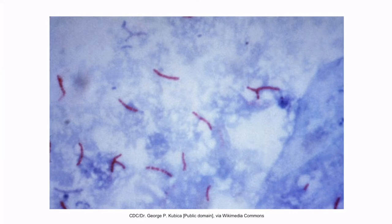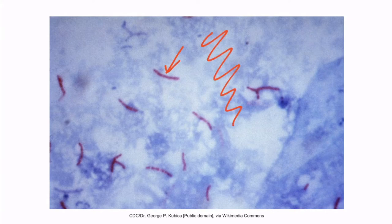This is an acid-fast stain of mycobacterium tuberculosis, not nocardia. However, nocardia would stain similarly, and this is a great image to see what the stain looks like generally. Notice that the organism appears bright red after staining and there is a blue background. In the acid-fast stain, a sample of the organism is stained red with carbofusion; alcohol is added followed by a methylene blue counter stain. The high mycolic acid concentration in the cell wall of acid-fast organisms retains the red staining of carbofusion, so when the alcohol is added the red stain doesn't wash off. Therefore, acid-fast organisms hold fast to their red stain and appear red under the microscope with a methylene blue counter stain background.